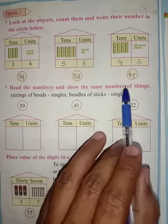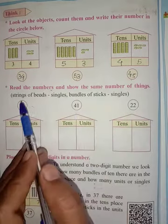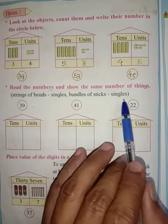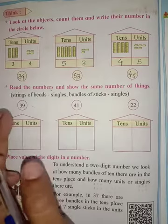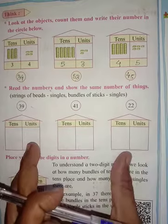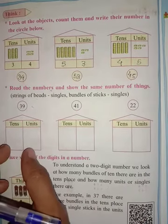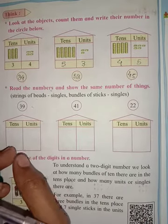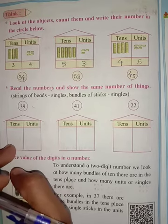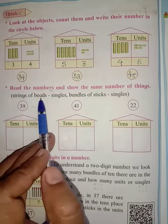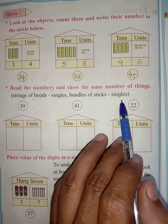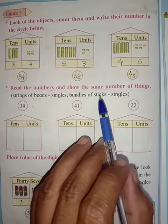Three numbers are in the circle: 39, 41, and 22. For the tens you use strings of beads, and for units you use single beads. Or bundles of sticks for tens and single sticks for units.